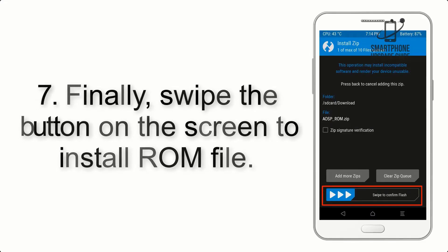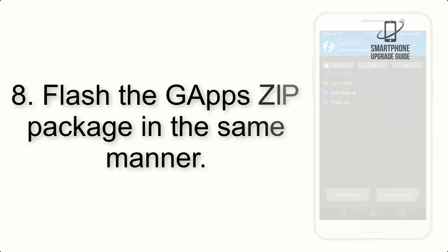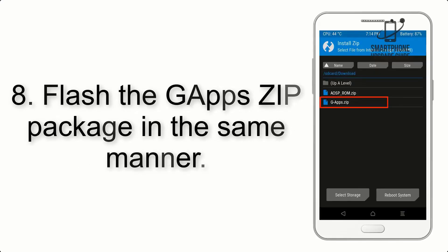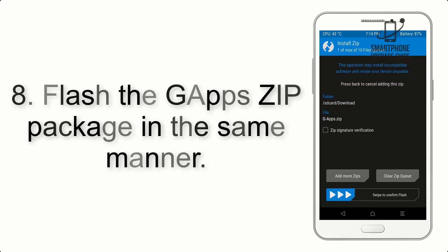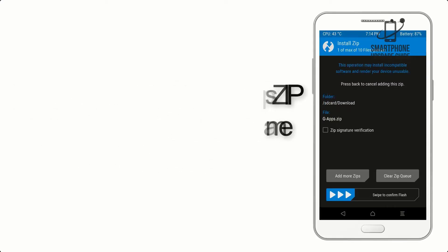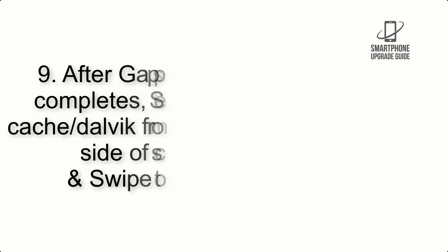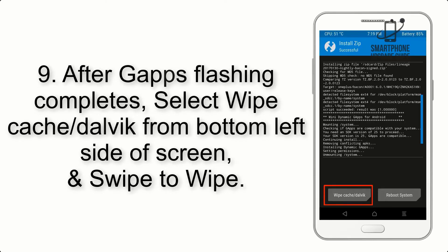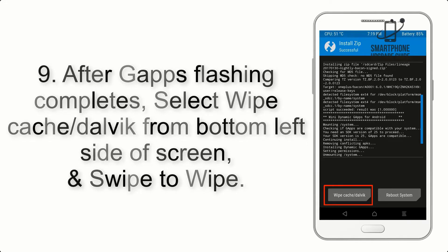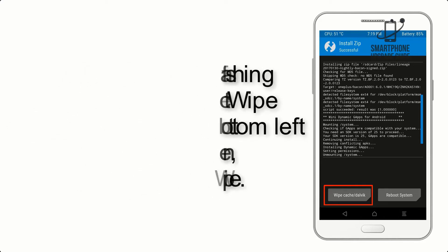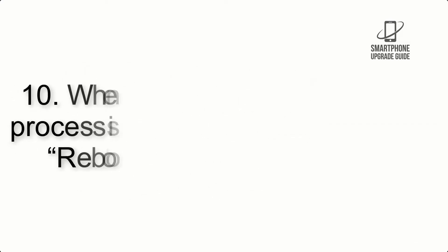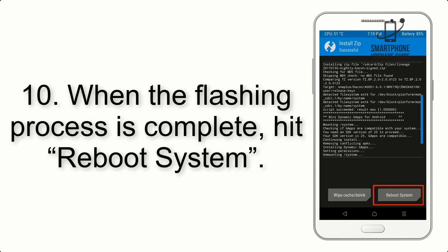Step 7: Swipe the button on the screen to install the ROM file. Step 8: Flash the GApps zip package in the same manner. Step 9: After GApps flashing completes, select Wipe Cache and Dalvik from the bottom left side of the screen and swipe to wipe.